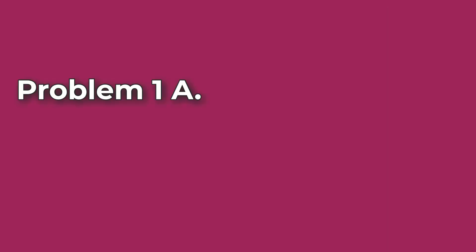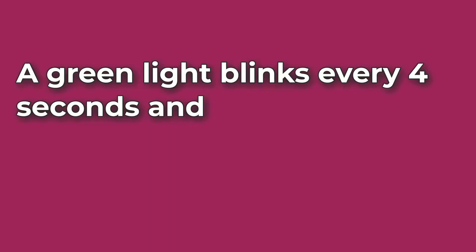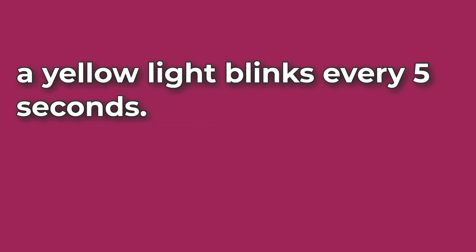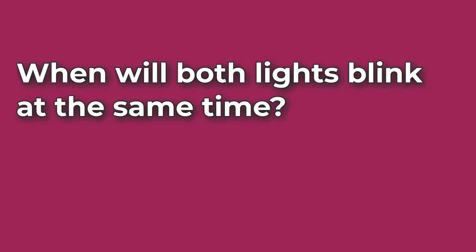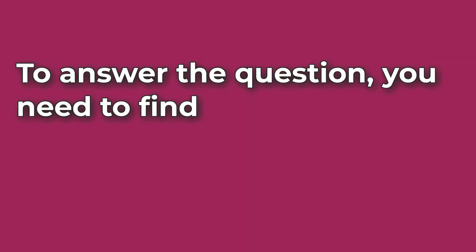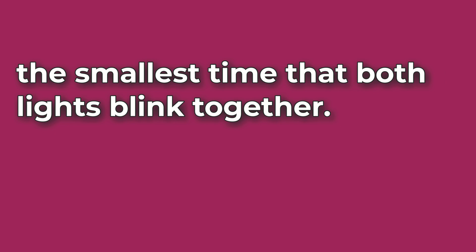Problem Number 1A. A green light blinks every 4 seconds and a yellow light blinks every 5 seconds. When will both lights blink at the same time? To answer the question, you need to find the smallest time that both lights blink together.